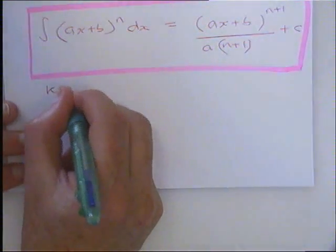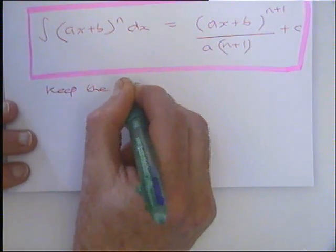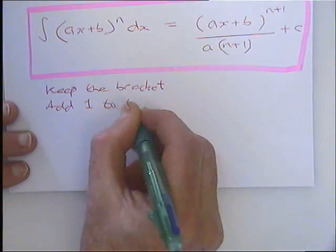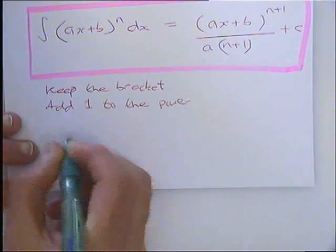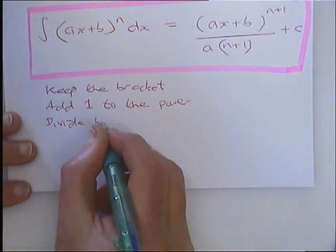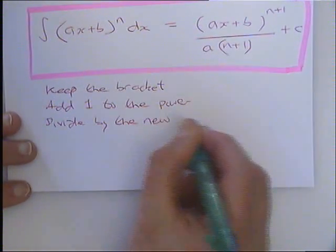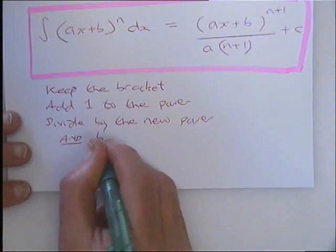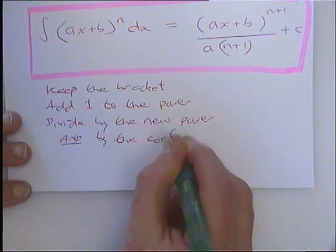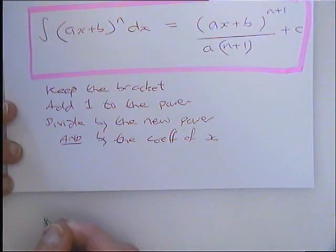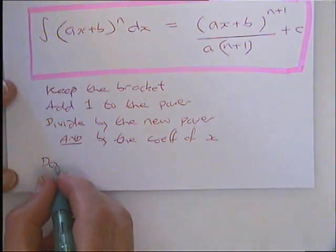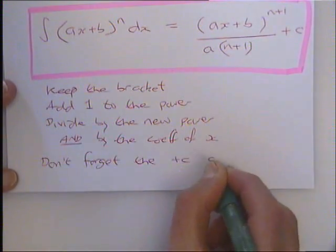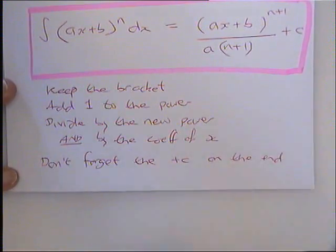So, you keep the bracket. You add 1 to the power. You divide by the new power. And by the coefficient of x. And what mustn't we forget, Callum? Oh, plus c. Yeah, okay. And don't forget that plus c on the end. Okay? Because Callum mentioned that earlier on.